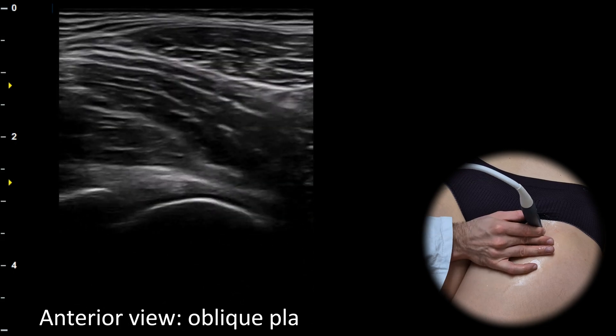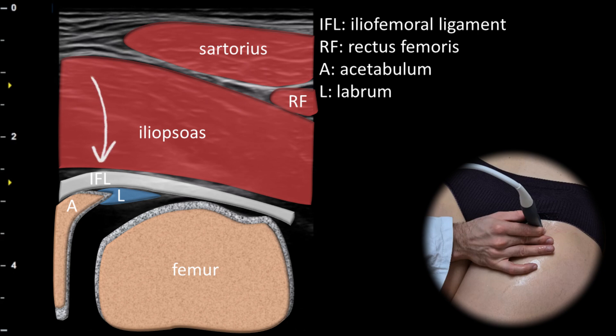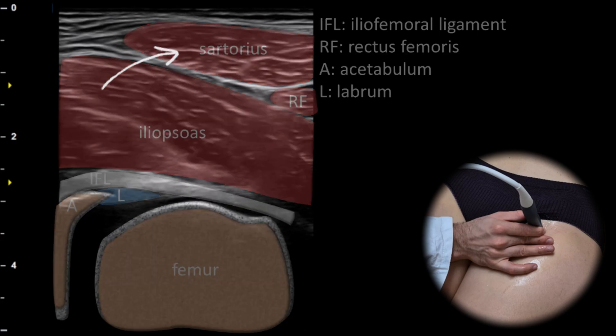When we rotate the probe to a slightly oblique plane with the long axis of the probe parallel to the long axis of the femoral neck, we can evaluate the femoroacetabular joint along with the femoroacetabular labrum. Superficially to the joint we can observe the iliofemoral ligament which reinforces the joint capsule. Superficially to the iliofemoral ligament we can evaluate the iliopsoas muscle and the sartorius muscle.